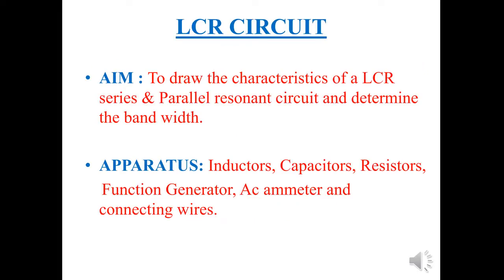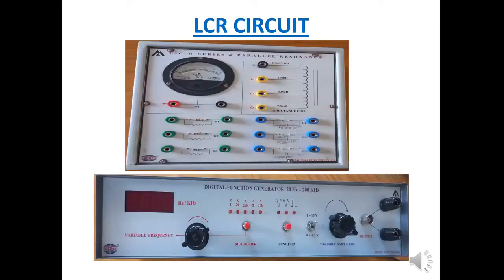Aim: to draw the characteristics of LCR series and parallel resonant circuit and determine the bandwidth. Apparatus: inductors, capacitors, resistors, function generator, AC ammeter, and connecting wires. These are the LCR circuit board and function generator. Generally the function generator is used to offer different frequencies to the LCR kit board, starting from 20Hz to 200kHz.